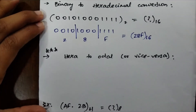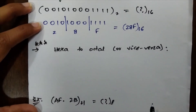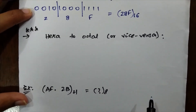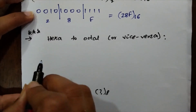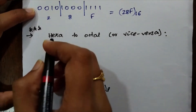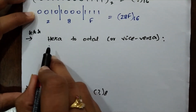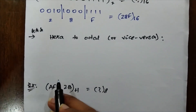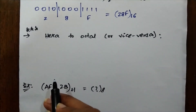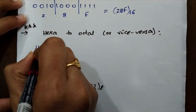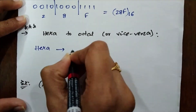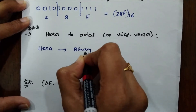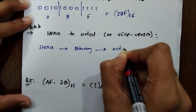Now coming to hexadecimal to octal or vice versa. This is somewhat easier but also a little tricky. Whenever you want to convert from hex to octal, you cannot do it directly. There is a bridge that connects hex to octal, which is the binary format. Hexadecimal must first be converted into its binary form, and then that binary form must be converted into octal. The same applies vice versa.